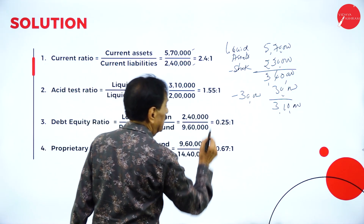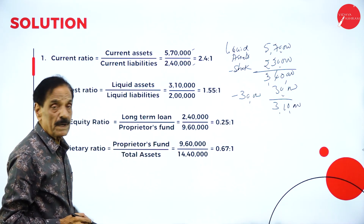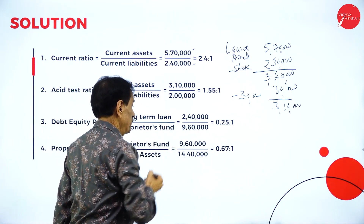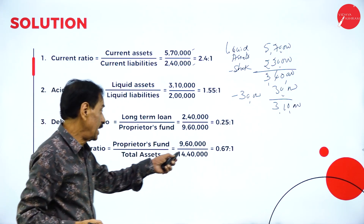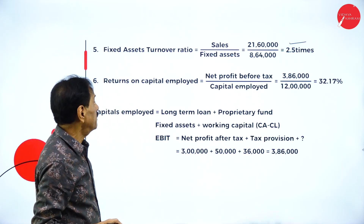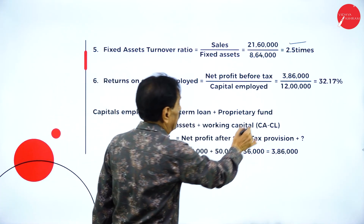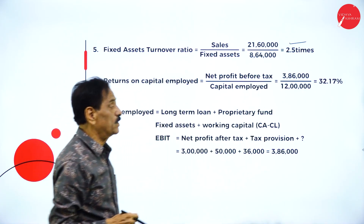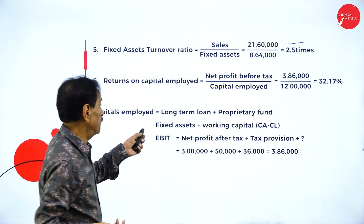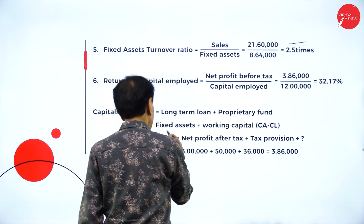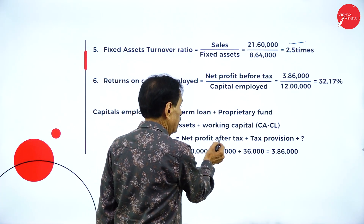The results: liquid ratio is 3 lakh 10,000 divided by 2 lakh — that is 1.55 to 1. Debt equity ratio: long-term loan 2 lakh 40,000 divided by proprietary fund 9 lakh 60,000 — that is 0.25. Proprietary ratio: 9 lakh 60,000 divided by total assets 14 lakh 40,000. Fixed asset turnover: 2.5 times. Return on capital employed: net profit before tax divided by 12 lakh — 32.17 percent.